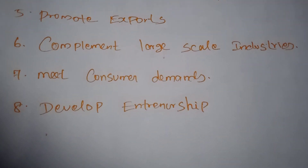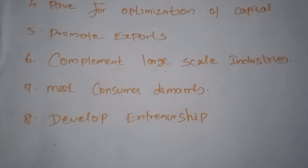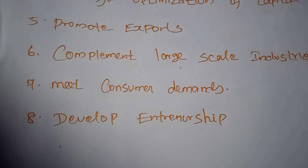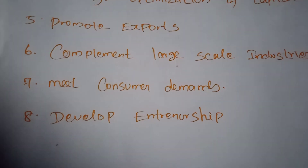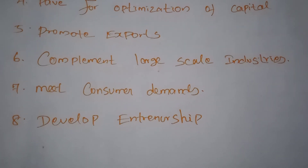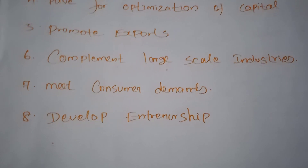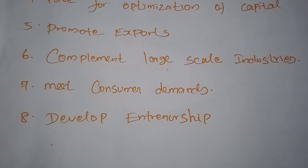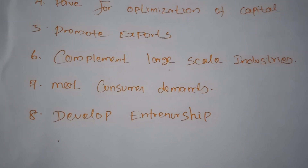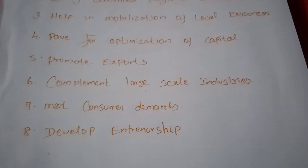Small-scale industries help increase the per capita income of India in various ways. Per capita income means the personal income of India. They also facilitate the development of backward areas and weaker sections of society by providing employment opportunities and entrepreneurial opportunities. Small-scale industries also help distribute national income in a more efficient and equitable manner among the various participants of society.